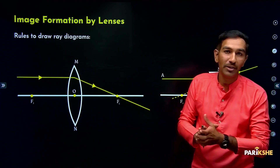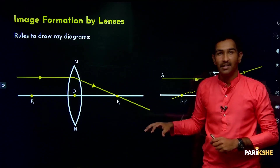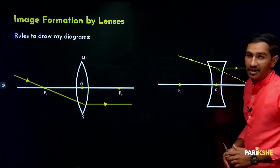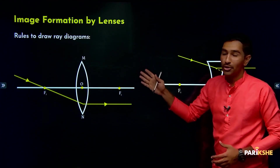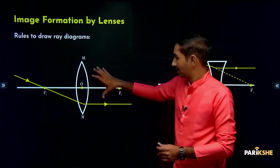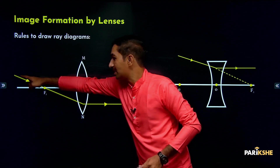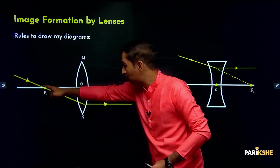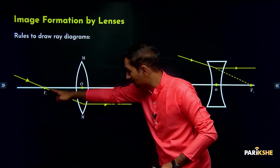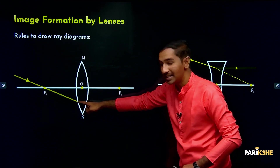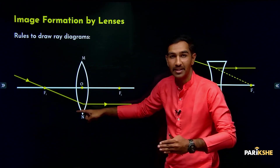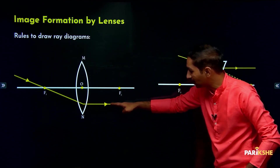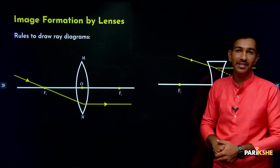This is a similar rule to what we studied with mirrors. Now the second rule for drawing ray diagrams: for a convex lens, the incident ray is projected in such a way that it is passing through the focus. When it passes through the focus and enters the lens, after refraction the refracted ray will be parallel to the principal axis.